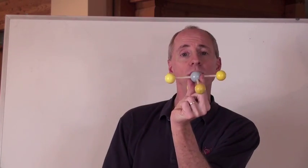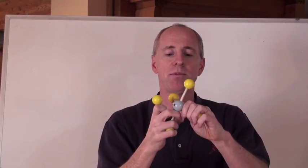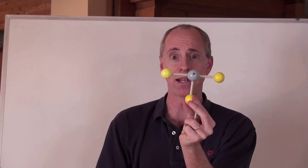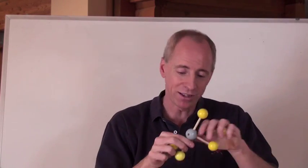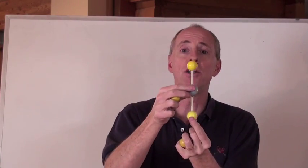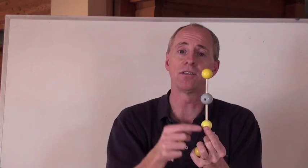Seesaw is always going to be a polar shape. The T-shape that comes off of the next one there is always going to be a polar shape. But the linear might actually be a non-polar shape if all three of these guys are the same, or even if the two of these guys are the same. That could be non-polar.